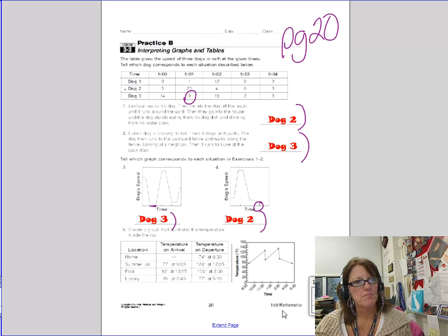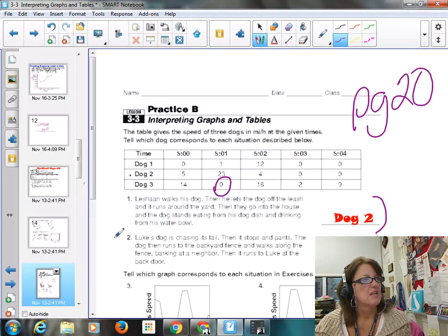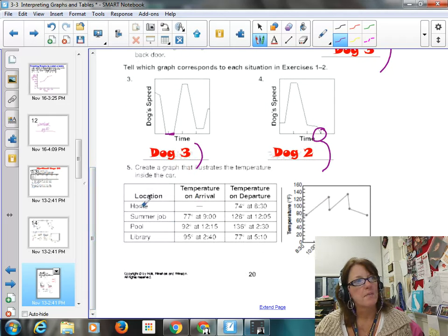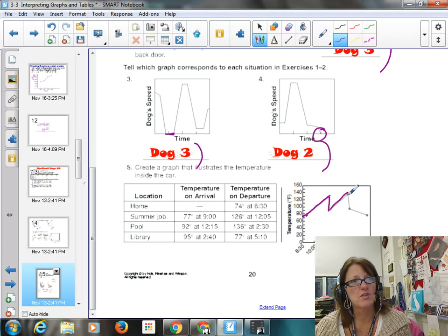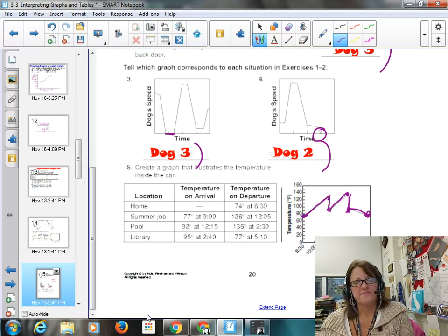Finally, on this last problem here, what you need to do is draw a graph that best represents the situation. You talk about home, it was 74 degrees at 8:30, so you got something like this, and then you start plotting these temperatures, and your graph should look something like this, with all of these data points and the timelines put in place.